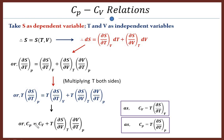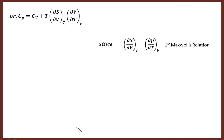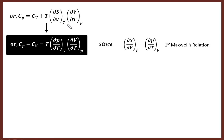Finally we get Cp equals Cv plus T times (∂S/∂V) at constant T, times (∂V/∂T) at constant p. From the first Maxwell's relation we know (∂S/∂V) at constant T equals (∂P/∂T) at constant v. So we utilize this relation and replace (∂S/∂V) in the expression to get the Cp minus Cv relation.